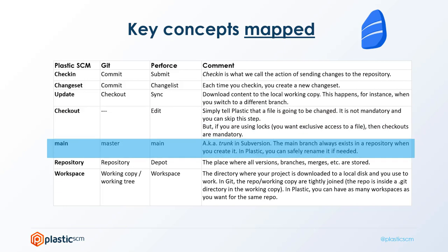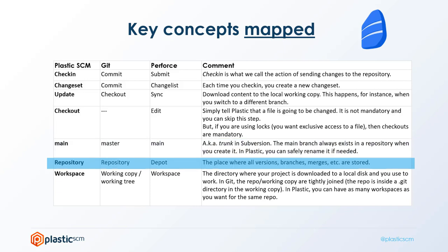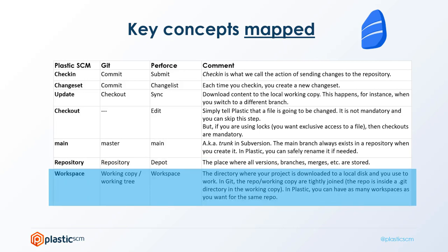For branch names, we call main what is master in Git and also main in Perforce. A repository where all versions, branches, and merges are stored, we call it a repo — Git calls it a repo too, and it's depot in Perforce. Then workspace, which is known as working copy or working tree in Git, and workspace in Perforce.